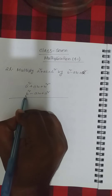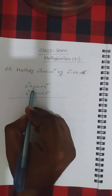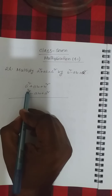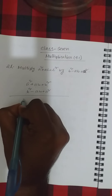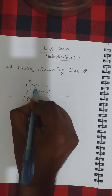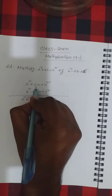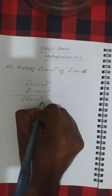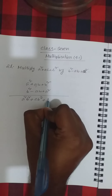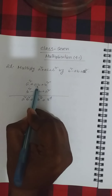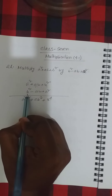We multiply a-squared plus ab plus b-squared by b-squared first. When we multiply a-squared plus ab plus b-squared by b-squared, it will be a-squared·b-squared, plus ab·b-squared which means a·b-cubed, plus b-squared·b-squared which will be b to the power 4.